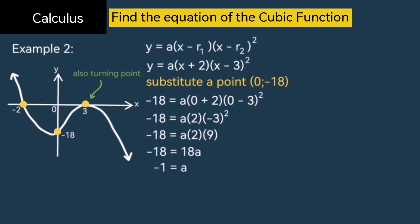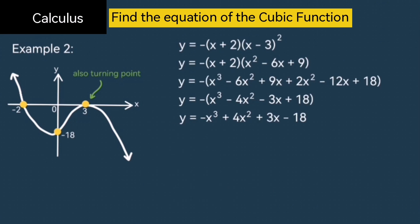And with that, we have the equation of the cubic function. Except this is again only in the factorized form. You'll have to multiply this out further, if you want it in the standard form. So, here I've done it for you. You can maybe just pause the video if you'd like to go through the algebra. But the final answer is negative x cubed plus 4x squared plus 3x minus 18.